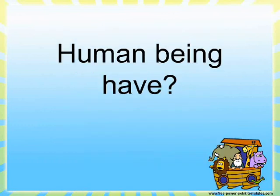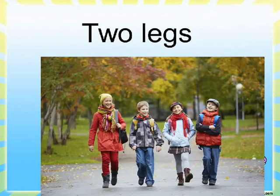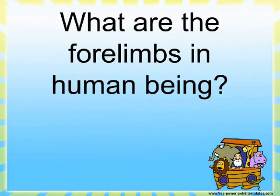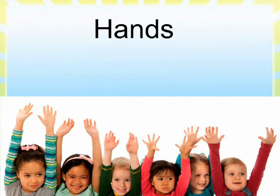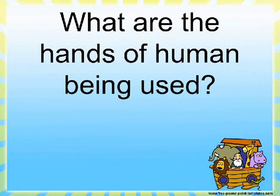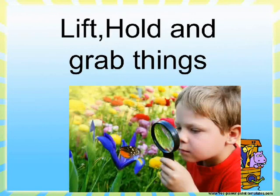Human beings have two legs. What are the forelimbs in human beings? Hands. What are the hands of human beings used for? To lift, hold, and grab things.